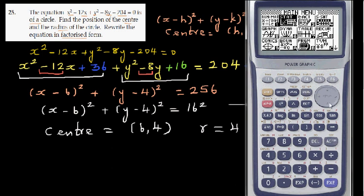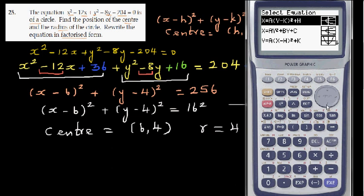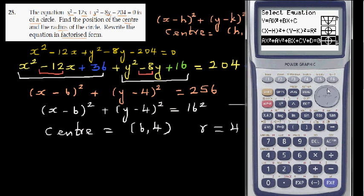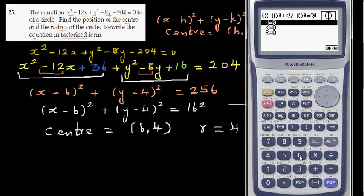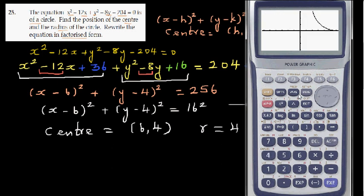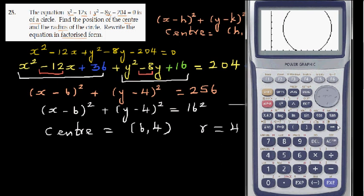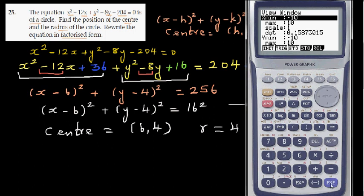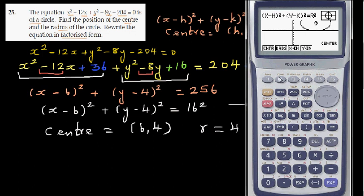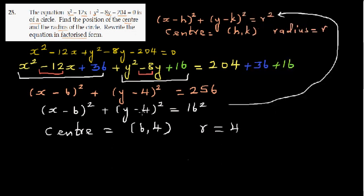Let's confirm this on the graphic calculator. Go to conics and scroll down to circle. Enter h as 6, k as 4, and the radius as 16, then draw it. You can scroll around to see the whole circle. The center is confirmed as (6, 4) and the radius is 16. This is how you convert from general form to standard form and find the center and radius.